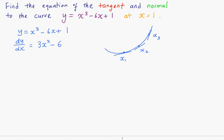So at the point when x = 1, dy/dx, which is the gradient, equals 3 - 6 = -3. This means that at x = 1, for example here, the gradient is -3.